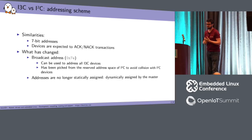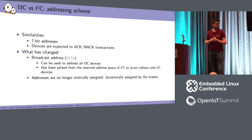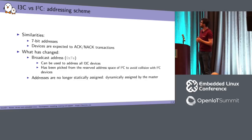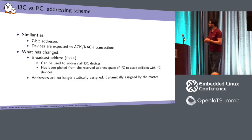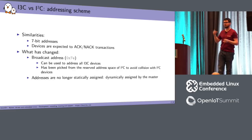Now let's switch to the addressing scheme. I3C uses 7-bit addresses, similar to I2C. Devices are expected to ACK or NACK transactions. But there are differences: devices are no longer statically assigned their addresses — the master decides which address is assigned — so there are no collisions. There is also a broadcast address, picked from the reserved range of the I2C protocol, which allows addressing all I3C devices on the bus simultaneously.